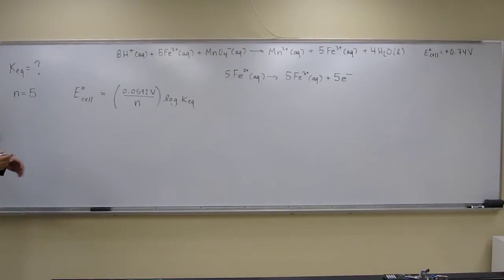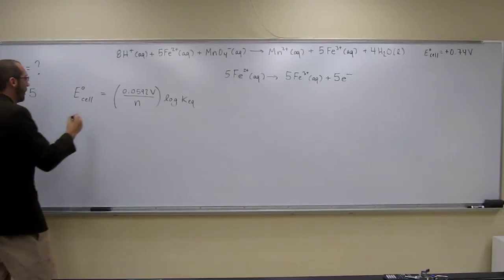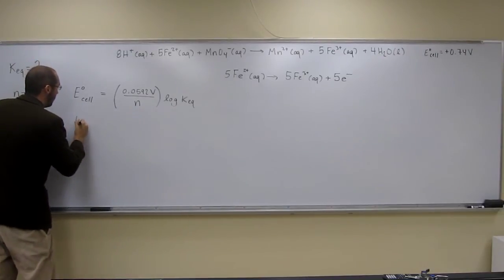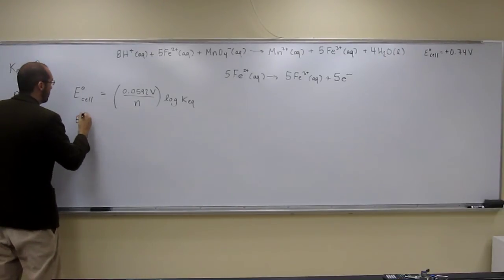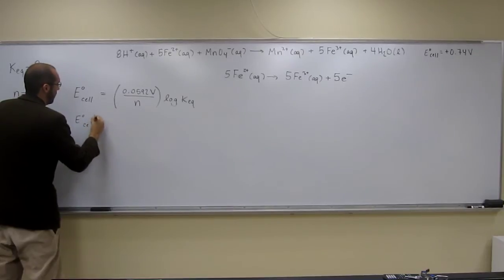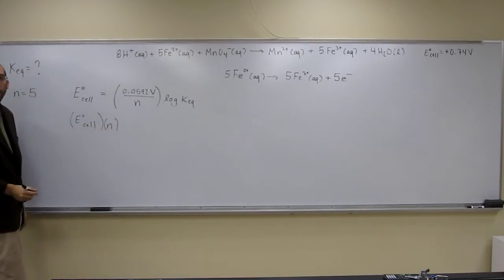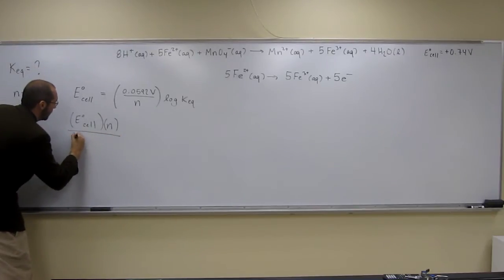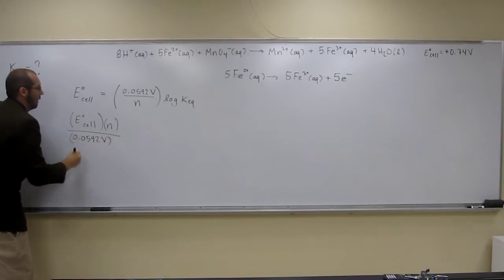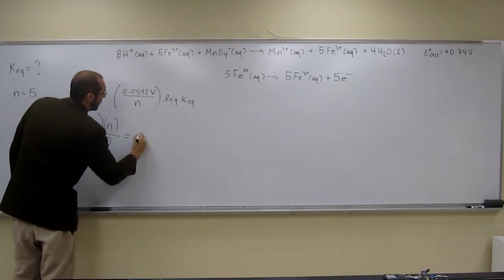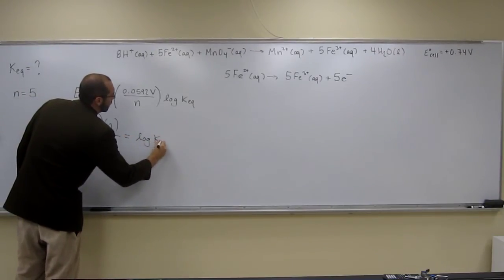So, let's rearrange this equation to solve for keq. E-cell, we'll multiply both sides by n. So, standard e-cell times n, like that, divided by 0.0592 volts